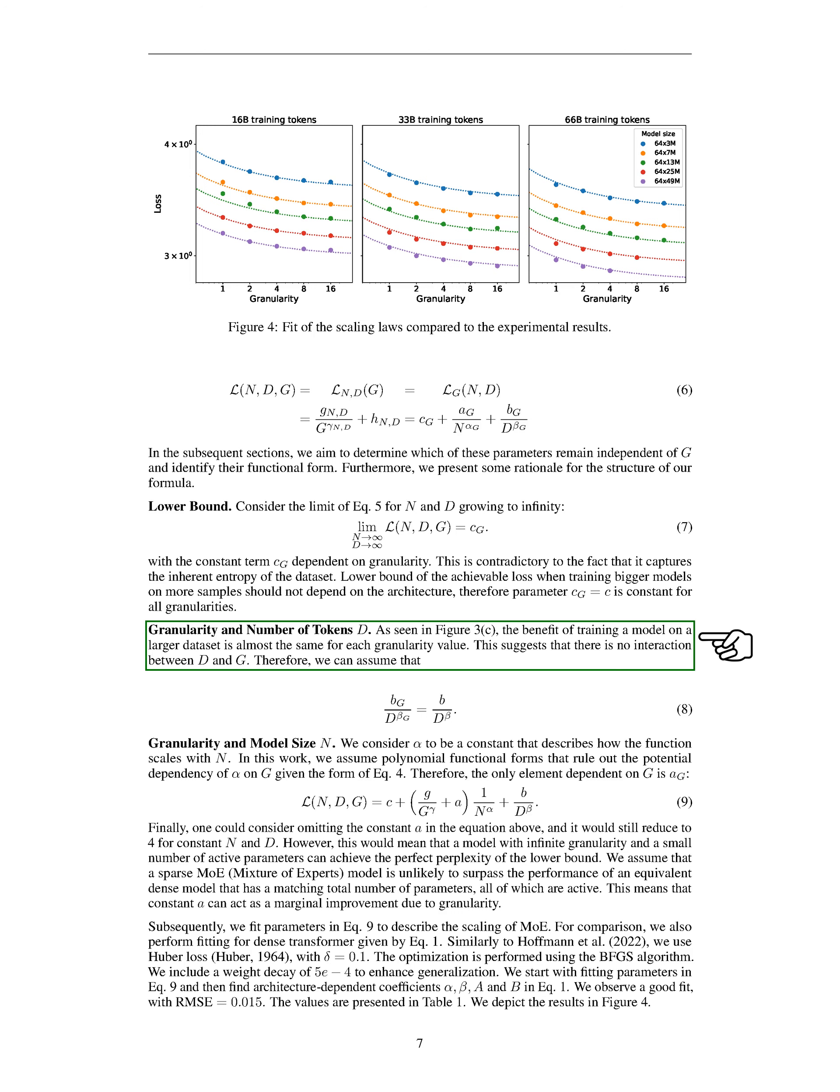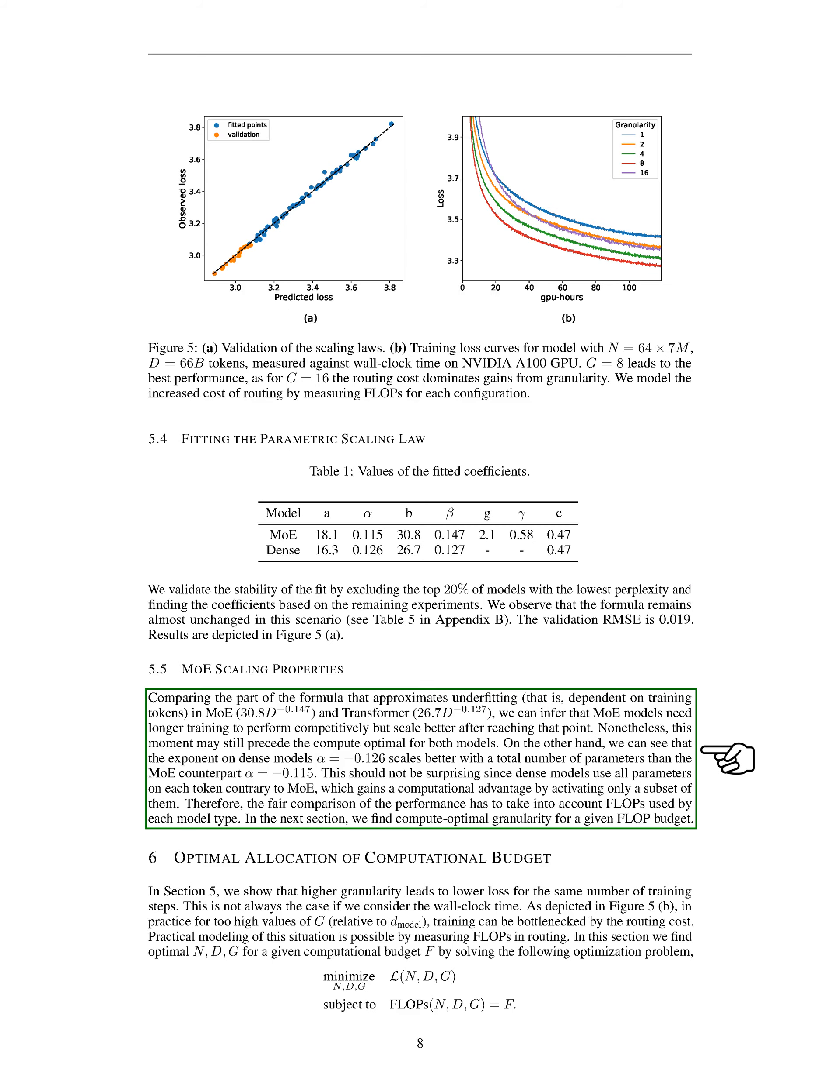Finally, we examine how well our models fit the data by removing the top performing models and recalculating our parameters. The results remain consistent, which reassures us of the stability of our findings. In comparing MoE models to traditional dense models, we find that MoE models might require more training to reach their peak performance but ultimately scale better. This is an important consideration when deciding between model types, especially when we take into account the computational resources each model type uses. In the next steps, we plan to determine the most efficient level of detail for a given computational budget, aiming to find the sweet spot where we get the best performance for our investment in computational power.